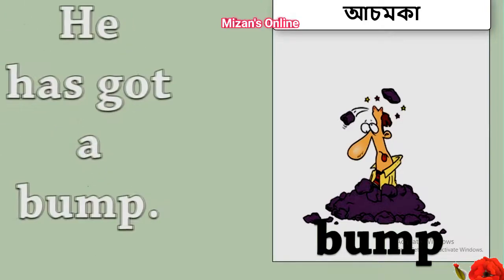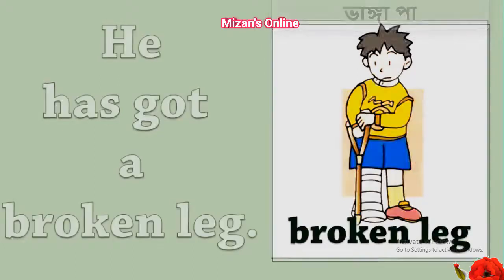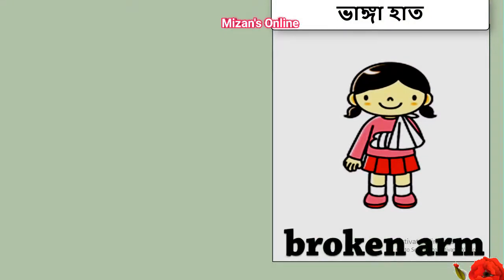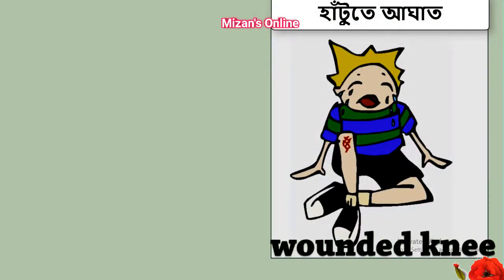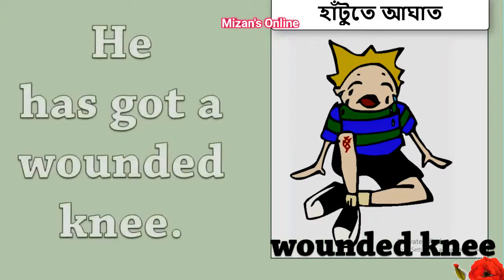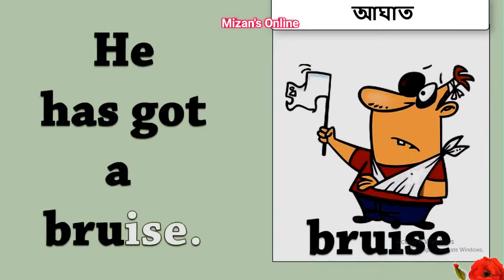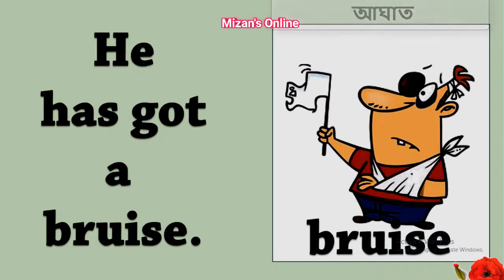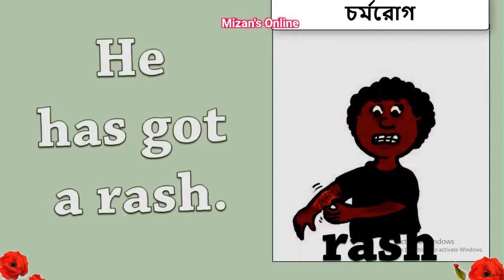Bump. He has got a broken arm. He has got a wounded knee. Bruise. He has got a bruise. Rash. He has got a rash.